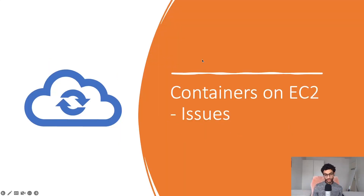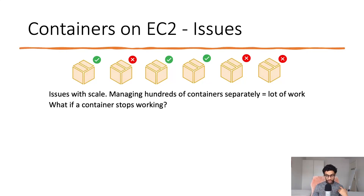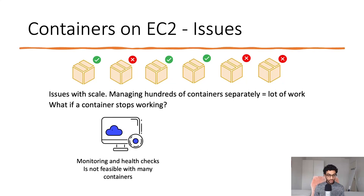There are a lot of issues when you run containers on EC2 instances. One of them is that of scale. Imagine having hundreds of containers — you need to manage these separately, and it's a lot of administrative overhead. What happens if a container stops working? You need to constantly make health checks, restart the container if it stops working, and make sure it can reestablish a connection with the ones that are working. Monitoring and health checks are not really feasible when you have a lot of containers.